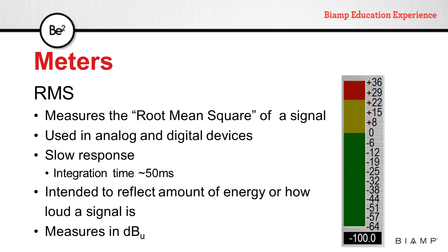RMS meters measure the root mean square of a signal — the amount of energy of a signal. We can find them in analog or digital devices. They also have a slower response, but the integration time is much faster than VU meters, usually about 50 milliseconds. They are intended to reflect the amount of energy, or how loud a signal is. The measurement of RMS meters is in dBu.